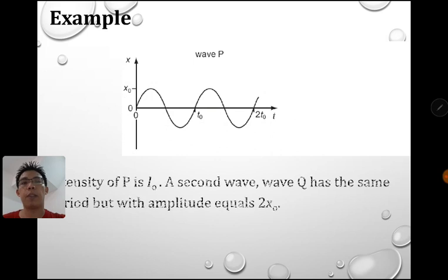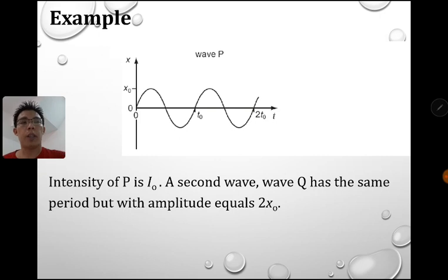So we look at one example first. So we have a wave P that has intensity I0. Second wave, wave Q has the same period, but the amplitude equals to 2X0. So let's try to state the intensity of Q in terms of P. So we want to find intensity of Q. So what is it in terms of I0? How many I0 compared to the wave P? So first of all, we know that intensity is proportional to amplitude square.